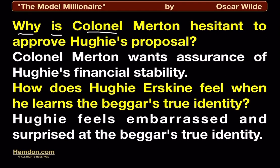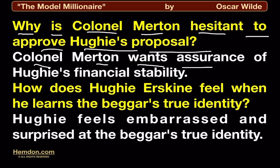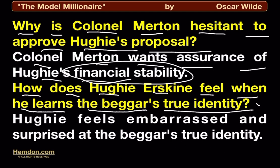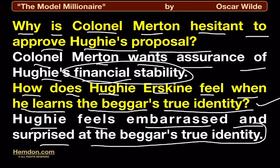Why is Colonel Merton hesitant to approve Hugh's proposal? Colonel Merton wants assurance of Hugh's financial stability. How does Hugh Askin feel when he learns the beggar's true identity? Hugh feels embarrassed and surprised at the beggar's true identity.